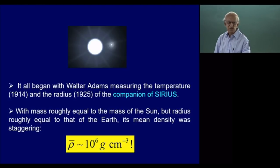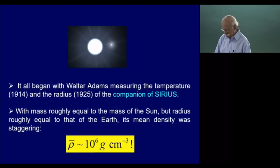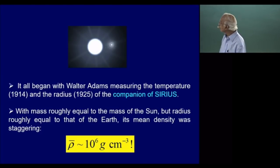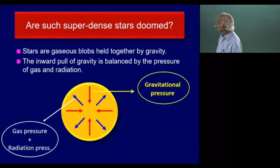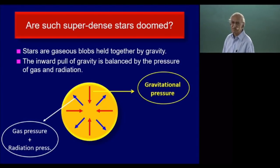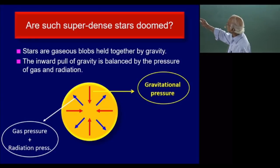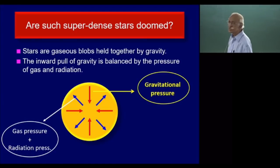What Adams found was that the mass of the companion of Sirius was roughly equal to the mass of the Sun, which was also the mass of Sirius itself. But its radius was not a million kilometers — it was only 10,000 kilometers, like the radius of the Earth. If you divide mass by volume, you get an astronomical density of a million grams per cubic centimeter. Nobody took notice of this except Eddington, who was terrified. He asked: are such super-dense stars doomed?